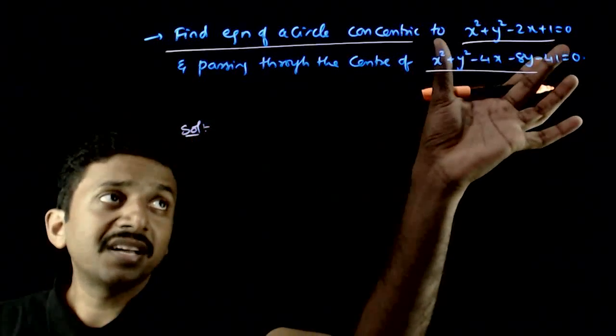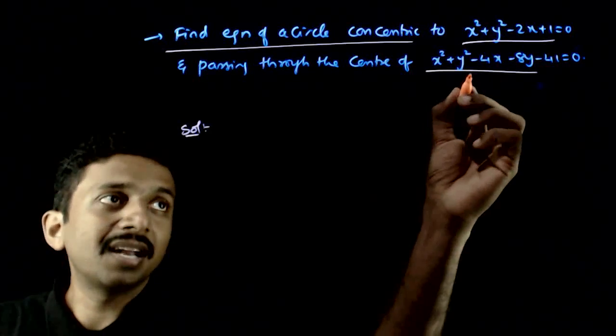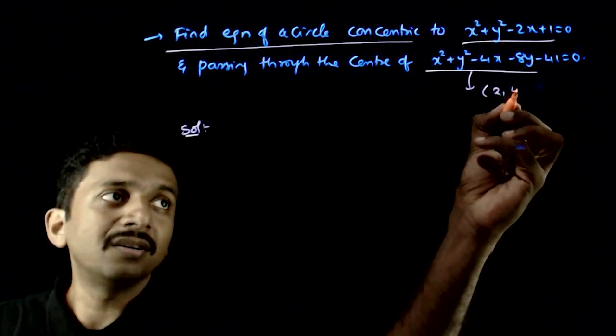So my required circle should be concentric and should pass through the center of this circle. So what is the circle? 2,4.